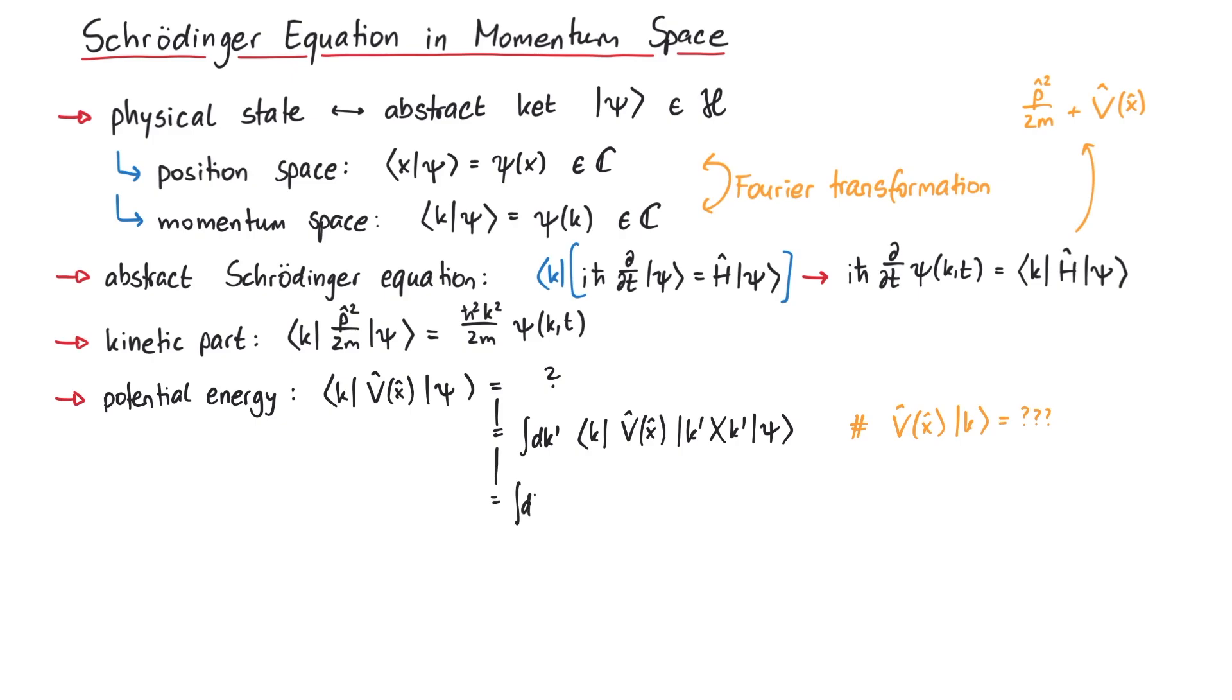To solve this problem, we can insert two more completeness relations in position space, using x and x-prime. The reason for this is that we can now write the term in the middle as v of x, which is now just a number, not an operator anymore. And the k-x and x-prime k-prime terms give us exponential functions.